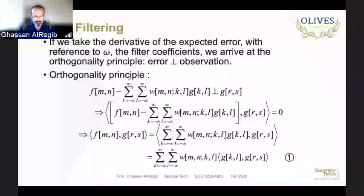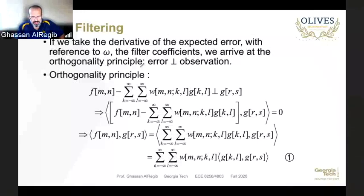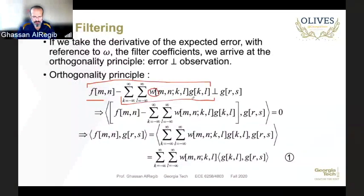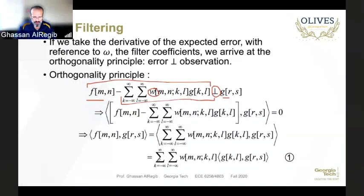There is a derivation here taking the derivative with respect to the weights and equating to zero — I used to cover this but it takes about half a lecture, so we will take it as given. What we have is: the error, which is the difference between the original image f and our estimate (a linear combination with weights w of observation g), is orthogonal to the signal g(m,n).